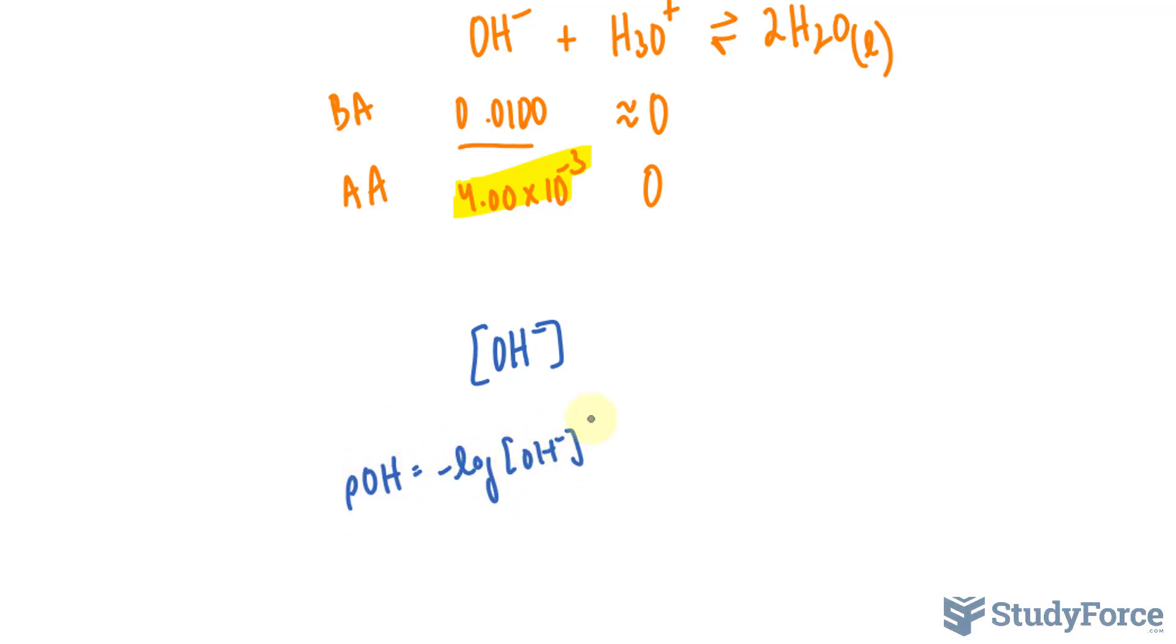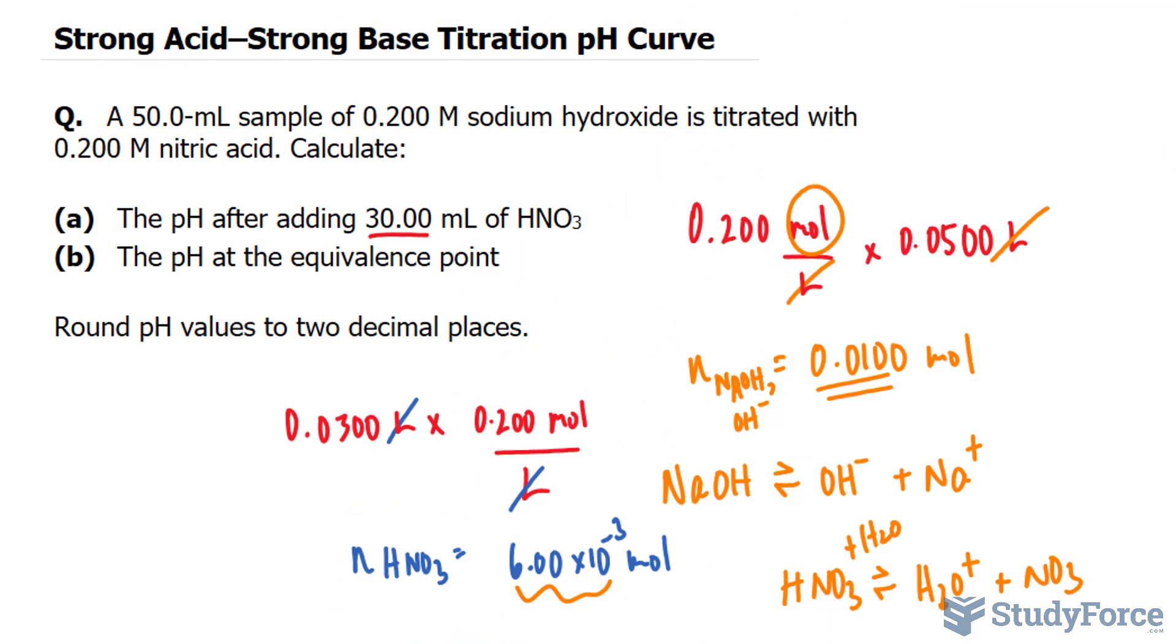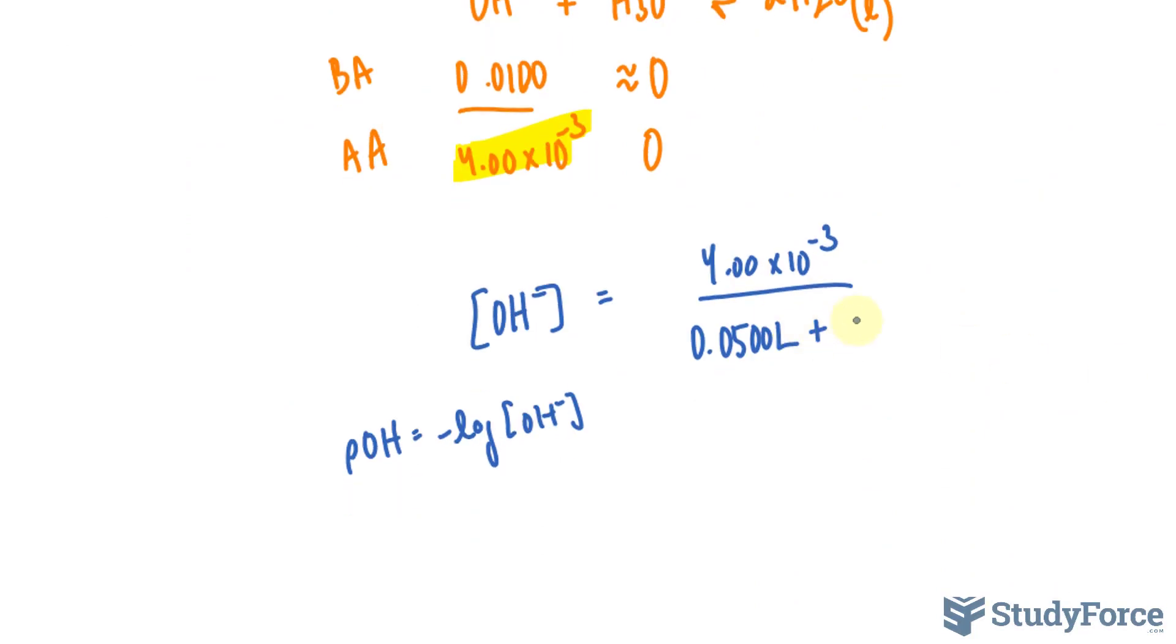Is equal to this number, 4.00 times 10 to the power of negative 3, over the volume of 0.0500 liters, plus the volume here of 0.0300, and this is the amount of moles.